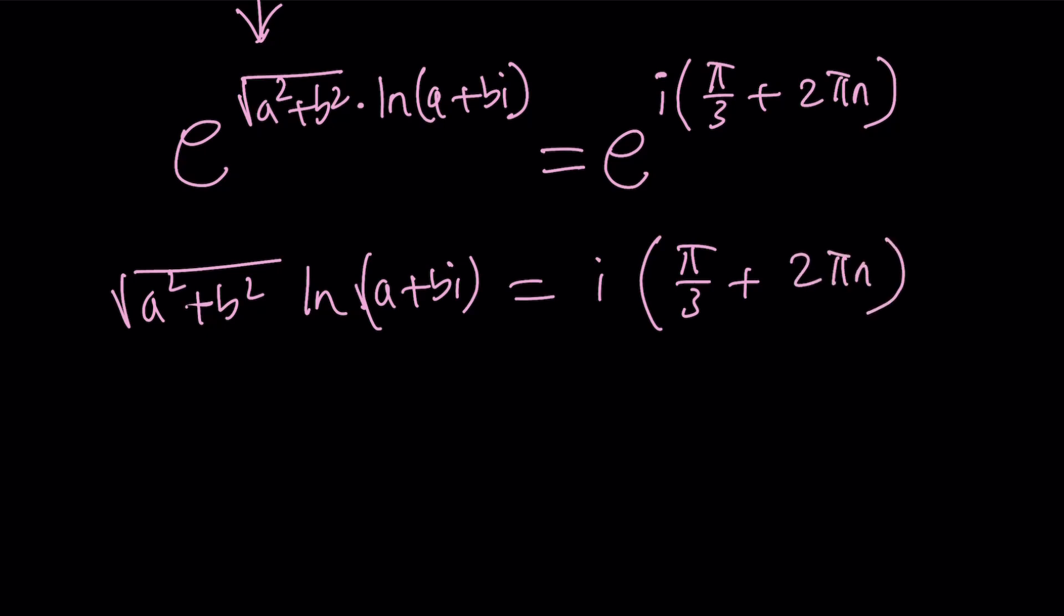Notice that the number on the right hand side is imaginary. What about the left hand side? Let's use the definition of the natural log of a complex number, which is the log of the modulus plus i times the argument. Now we don't know the argument, but we know tangent...